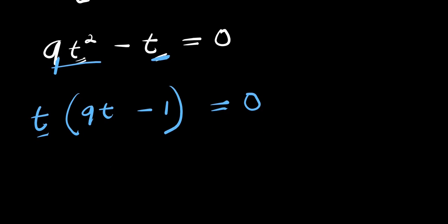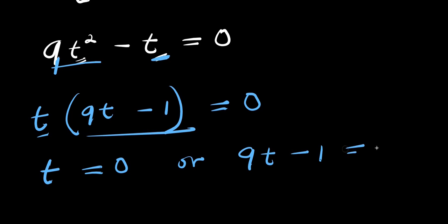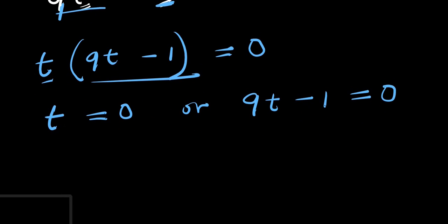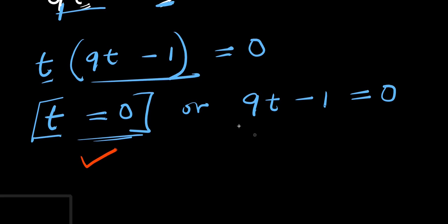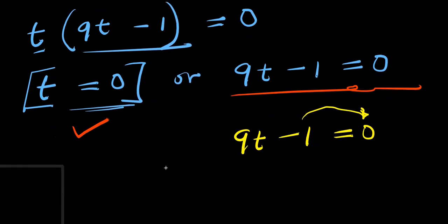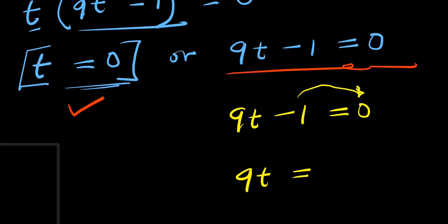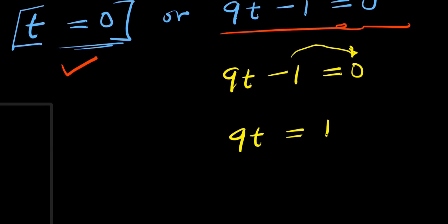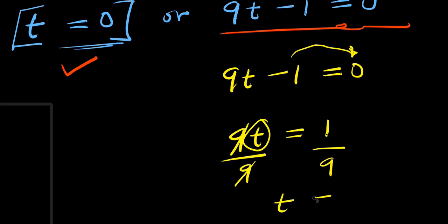From the factored form, we get two equations. The first is t equals 0. The second is 9t minus 1 equals 0. This first one is already solved. For the second, we move the negative 1 over: 9t equals 1. We isolate t by dividing both sides by 9, giving t equals 1 over 9.